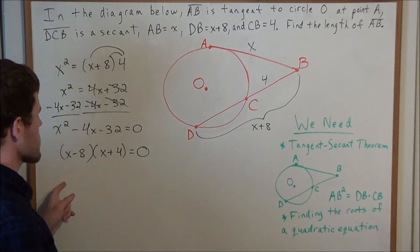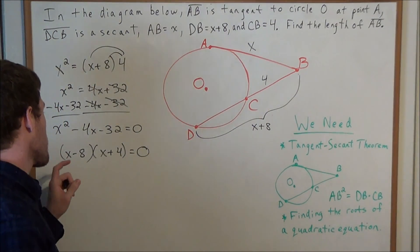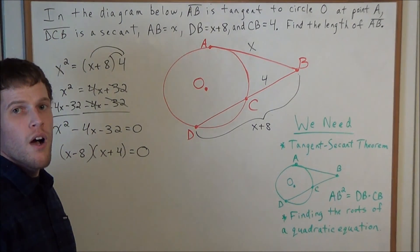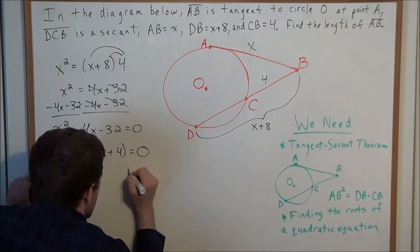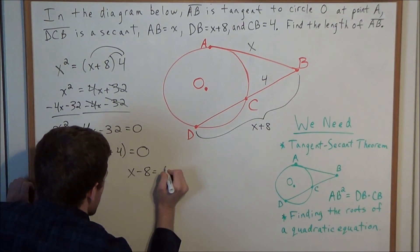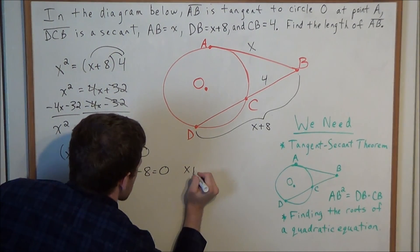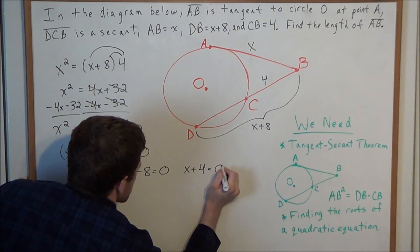So now we need to consider two cases. Remember, when we have the product of two numbers equal to 0, either one of those numbers could be 0. So we have either X minus 8 is equal to 0, or we have another case where X plus 4 is equal to 0.